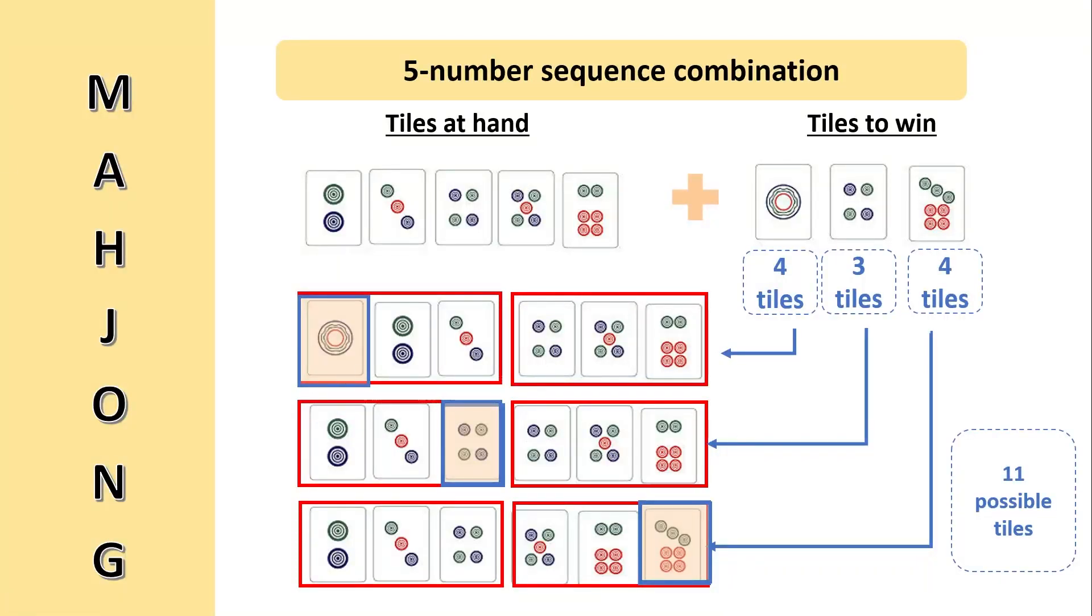In this situation, there are 11 taus we can draw that will win us the game. Since there is already one si tong in our hand, there will only be three more left to draw from. Assuming that no yi tong or qi tong are in the discard pile or in your hand, there will be four of each of them to draw from.